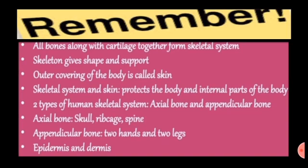Remember: all the bones in the body along with the cartilage together form the skeletal system. The skeleton gives shape and support to the body, and the outer covering of the body is called the skin. The skeletal system and the skin perform the important function of protecting the body and internal body parts. The two types of the human skeletal system are the axial skeleton and the appendicular skeleton. The skull, the rib cage, the backbone, and the bones of the arms and legs are the main parts of the human skeletal system. Epidermis and dermis are the two main layers of human skin. We have now completed Lesson 8: Our Skeletal System and the Skin.